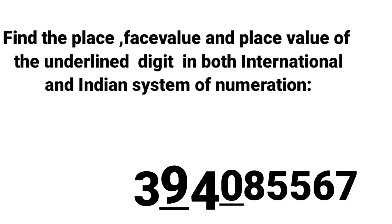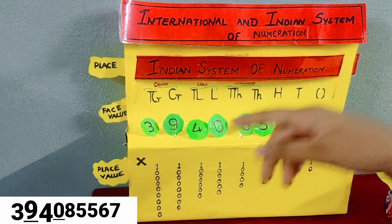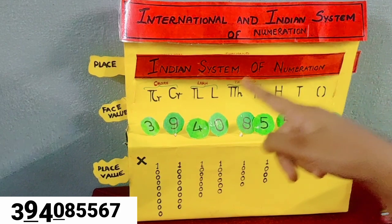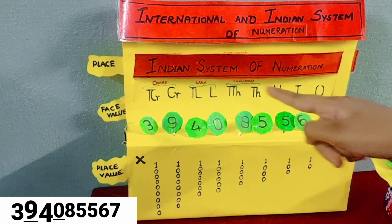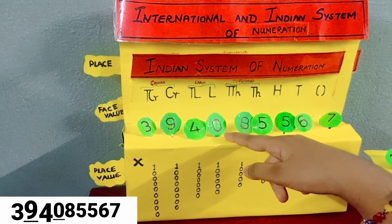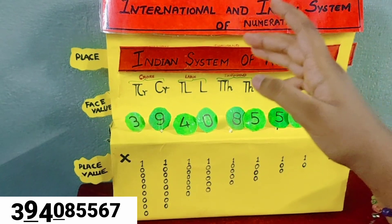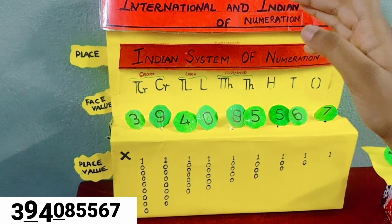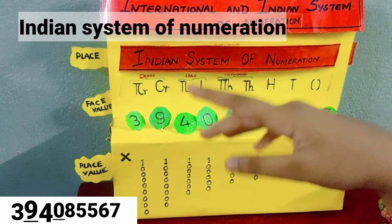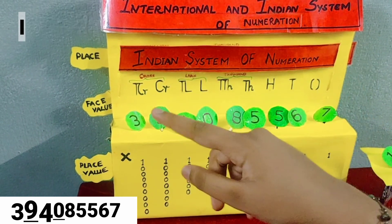Now let's solve another type of problem: find the place, face value, and place value of the underlined digit in both the international and Indian system of numeration. Here, 9 and 0 are underlined. Let's see the place, face value, and place value in the Indian system of numeration.